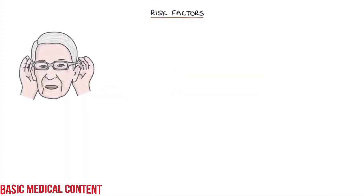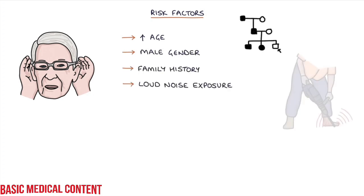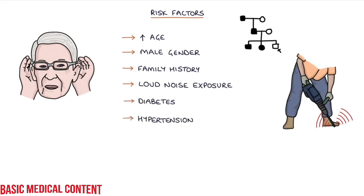Let's talk about risk factors. Probably the main risk factor is age, and as the age increases so does the risk of presbycusis. Other risk factors are male gender, family history of presbycusis, loud noise exposure during the lifetime, diabetes, hypertension, the use of ototoxic medications, and smoking.